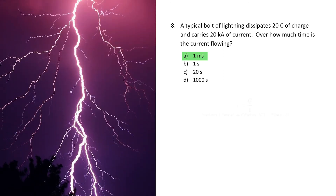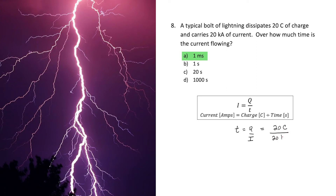If we look at the formula that relates current, charge, and time, we see that current equals charge dissipated divided by time. If I rearrange for T, then time equals charge divided by current. If I take 20 coulombs and divide it by 20 kiloamperes, then I'm left with one millisecond. In our daily life, we sometimes see lightning — I've never seen a bolt of lightning that lasts a thousand seconds. One millisecond is a very typical time for a bolt of lightning to last.